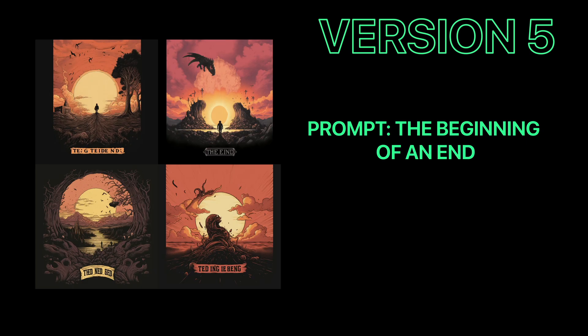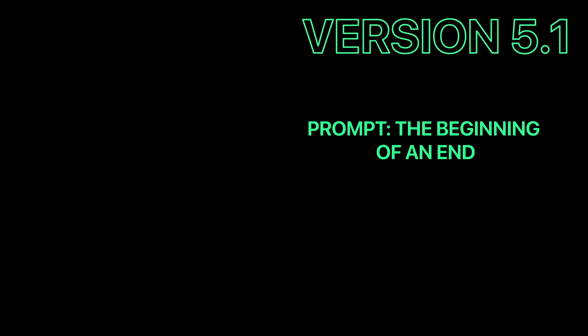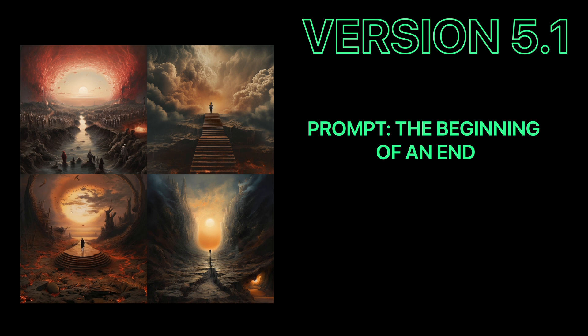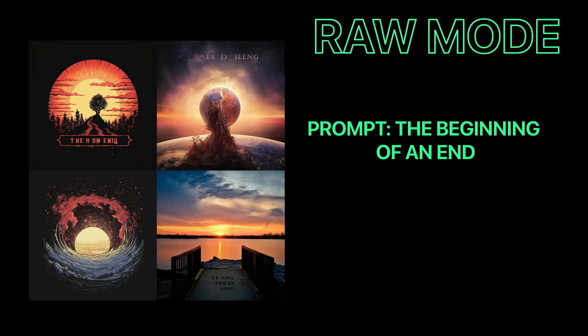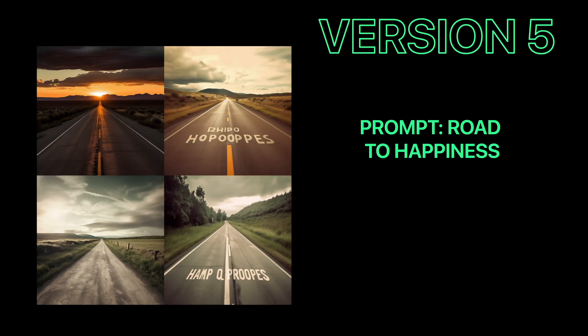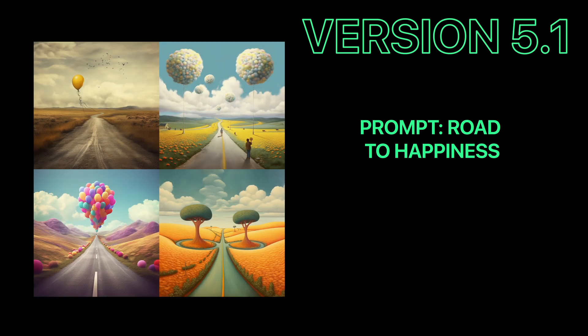With 'The Beginning of an End,' version 5 created poster-styled images with text because it didn't pick up the theme. In 5.1, the results are much better and look really cool. In raw mode the results are varied, but the prompt is very broad — you'll need to be more specific for exact results. With 'Road to Happiness,' version 5 gave a dull, sad-looking result, but in 5.1 the mood changes to much happier. Poetry prompts are a great addition — if you liked them in version 4, you'll want to try them in 5.1.